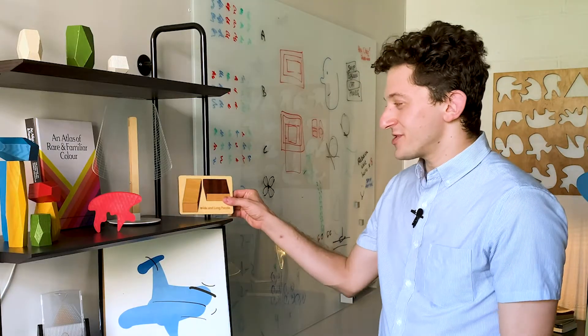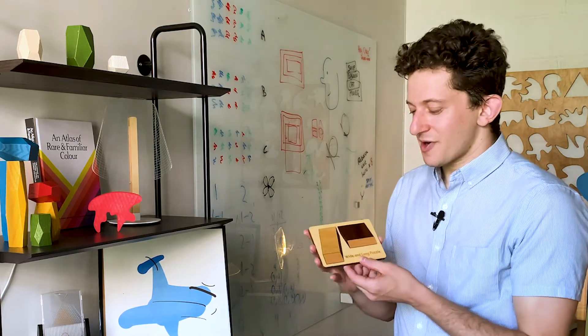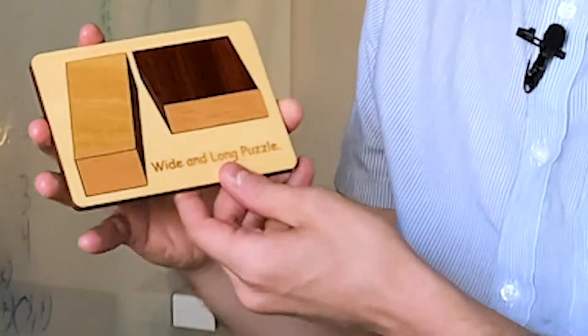One thing that gets perception researchers really excited are visual illusions, which are phenomena that make you experience the world in a way that it isn't really. And this is one of my favorite examples. It's called Shepherd's Tables.